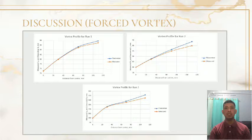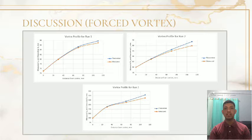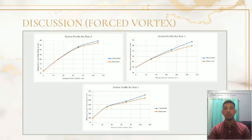Based on all the figures above, it can be concluded that the trend of the graphs obtained is directly proportional. As the distance from center increases, the measured H and theoretical HV also increase, so it can be assumed that the stream function form is parabolic in nature. The angular velocity value differs for each set because the number of rotations accomplished in 60 seconds varies. The more rotations accomplished in 60 seconds, the higher the angular velocity. Angular velocity is also related to H; when H increases, angular velocity also increases.